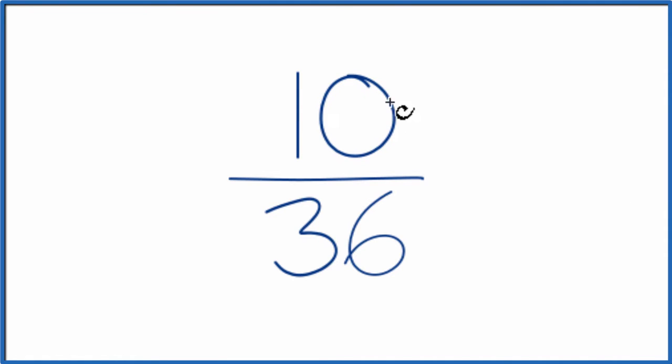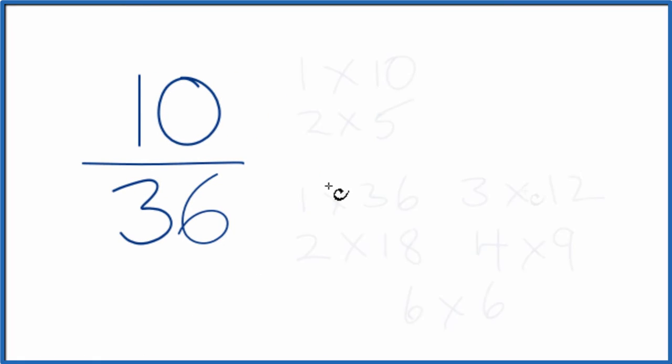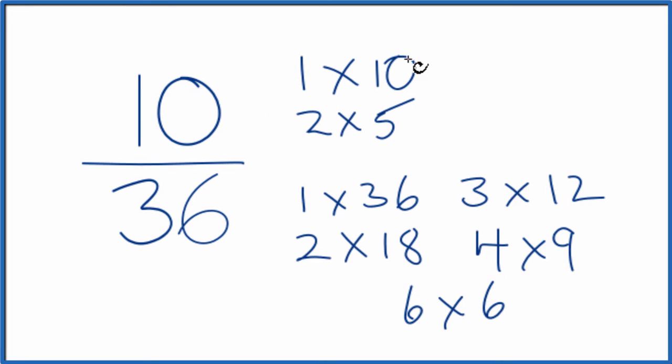Let's write the factors for 10 and 36. These are the factors for 10 and then for 36. We're looking for the greatest common factor, something that goes into 10 and 36. As I look through here, the greatest common factor is just 2.